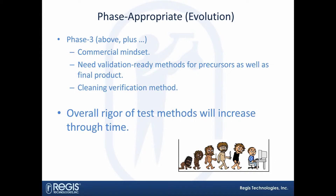There's a lot of planning on the drug product development side as well, but you do have a commercial mindset. And actually, you want to start validating your methods for even the precursors in your synthesis. The definition of a precursor is starting materials, key raw materials, and intermediates — just lumped together in one word. There's also a cleaning verification method that I'll touch on as well.